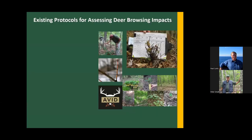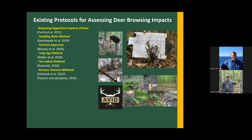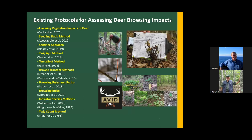There are many existing protocols for assessing deer browse impacts. I'll list some of the more recent, more commonly used methods. We're going to talk initially about AVID — assessing vegetation impacts of deer — but also the Sentinel approach, the twig age, and the 10 tallest methods in a bit more detail. I just want folks to be aware that there are a number of different protocols that have been recommended over the years to evaluate deer impacts on forest regeneration.